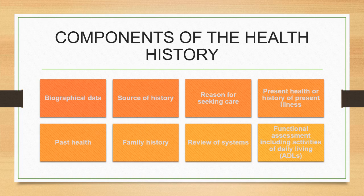The components of the health history are listed on page 49 in your textbook. They include specific information about the patient, which is the biographical data; the source of the history, which is important in case there's ever a question about the validity of the information; the reason the patient is seeking care today; the present health or history of the present illness; the past health history; the patient's family history if it's known; a review of systems; and a functional assessment including ADLs.